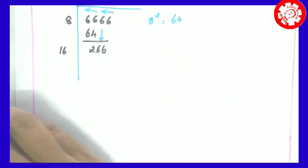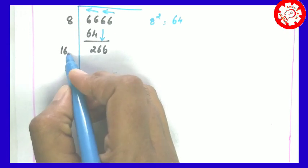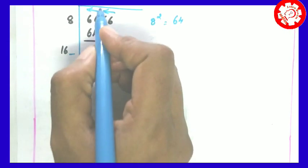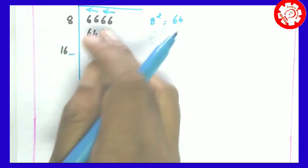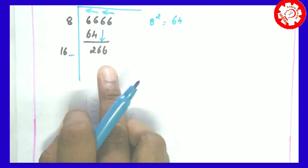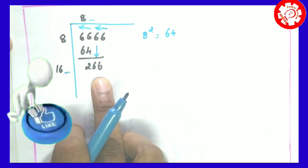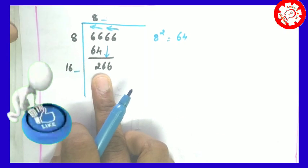Check the unit place value. In this step, we identify the nearest perfect square.